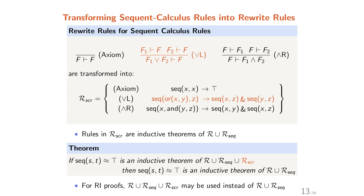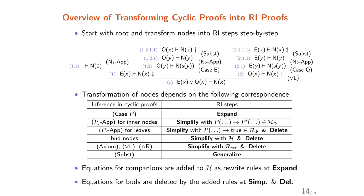We then have this theorem: if the equation sec(S, T) = top is an inductive theorem of R union R_SEC union R_SER, then this equation is also an inductive theorem of R union R_SEC. According to this theorem, for rewrite induction proofs, R union R_SEC union R_SER may be used instead of R union R_SEC. Then we can transform the cyclic proof into the RI proof.